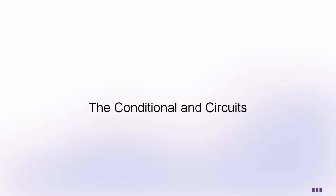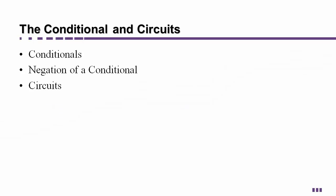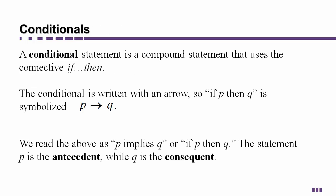Welcome to our discussion on the conditional and a teeny tiny bit on circuits. The things we want to cover here are conditionals, how to find the negation of a conditional, and just a little on circuits. First of all, what is a conditional? A conditional is an if-then statement. Written mathematically in symbols, it's P with a little arrow and then Q, which translates as 'if P then Q' or 'P implies Q.'